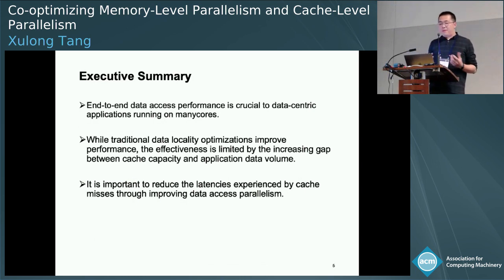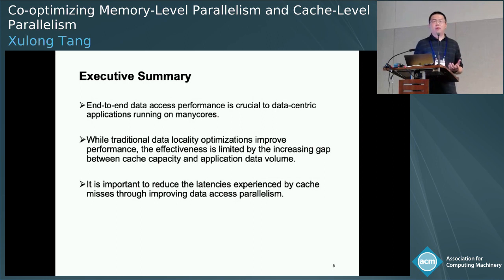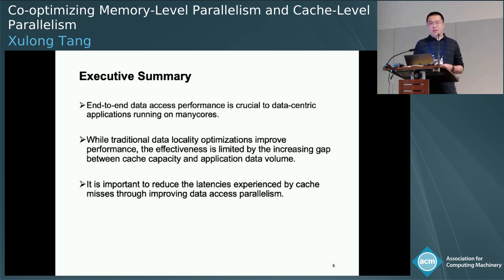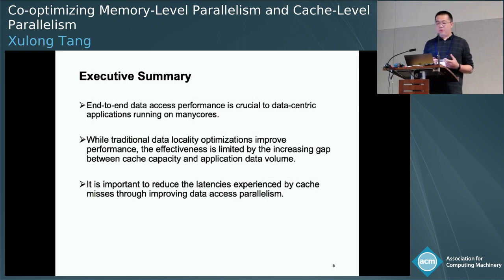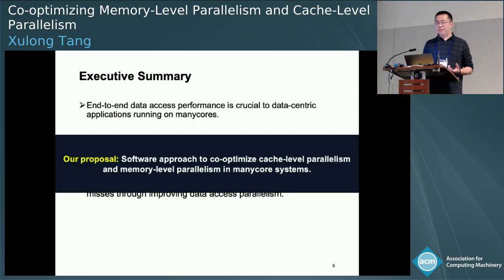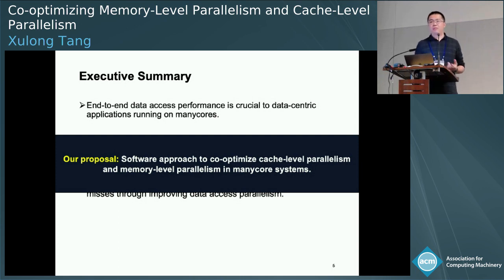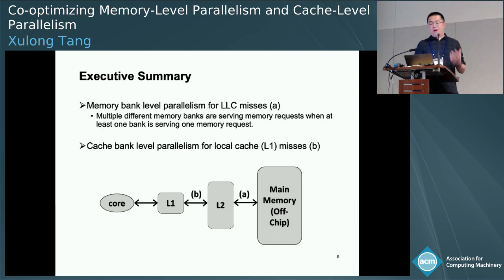We are motivated by the fact that end-to-end data access performance plays an important role in shaping overall application performance on many platforms. While traditional data locality optimizations are important and reduce data access latency, their effectiveness is limited by the growing gap between cache capacity and application data volume. Therefore, our proposal in this paper is a software approach to co-optimize cache-level parallelism (CLP) for local cache misses — that is, last-level cache hits — and memory-level parallelism (MLP) for last-level cache misses, which are the main memory requests.